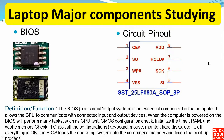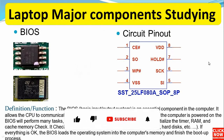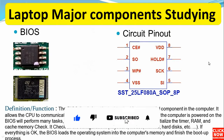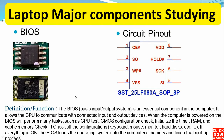The next component is the BIOS, or Basic Input Output System. Here we have the BIOS pin configuration — this is the schematic for the 8-pin BIOS chip. Pin 1 is chip select; pin 2 is serial output; pin 3 is write protect; pin 4 is connected to ground; pin 5 is serial input; pin 6 is the serial clock; pin 7 is hold; and pin 8 is VDD — the working power supply for the BIOS.